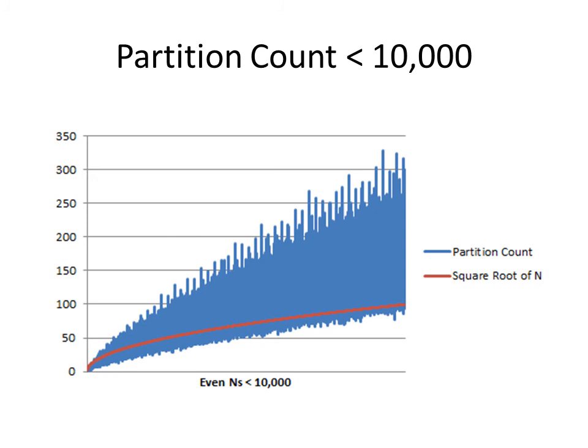It really requires a suspension of disbelief to think there exists an integer of vast magnitude for which it is false, for which there are zero partitions. Remember that the conjecture only asks for one partition, one pair of primes, but some to a given n.